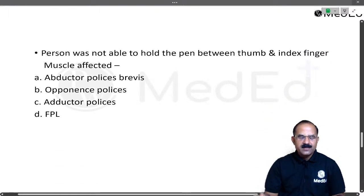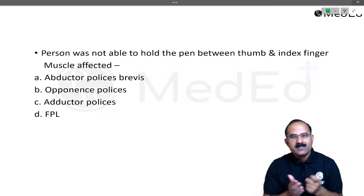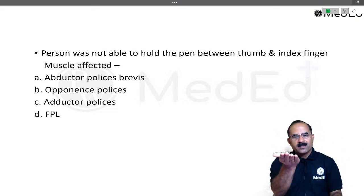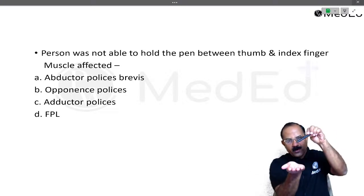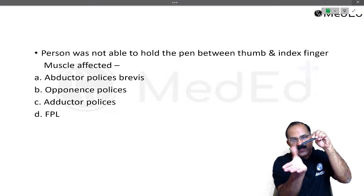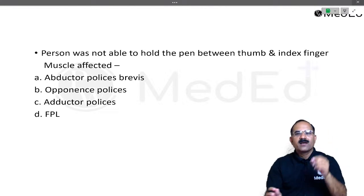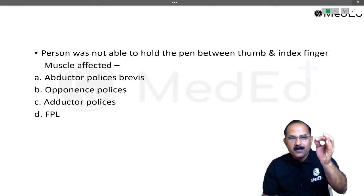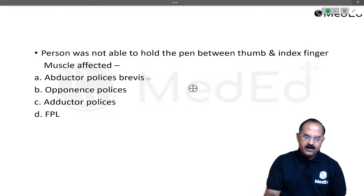Another MCQ: a person was not able to hold a pen between the thumb and the index finger. This is the pen test we always discuss in class. The palm is placed on the table and a pen is brought close; the person is asked to touch the pen with the thumb. The muscle being tested is the abductor pollicis brevis. The pen test tests the abductor pollicis brevis.